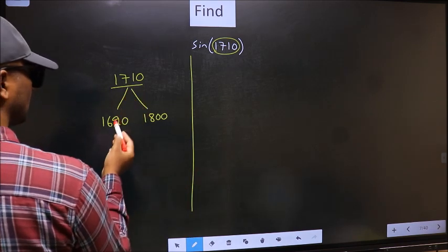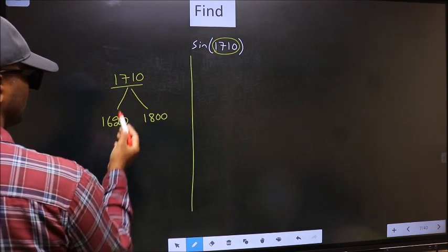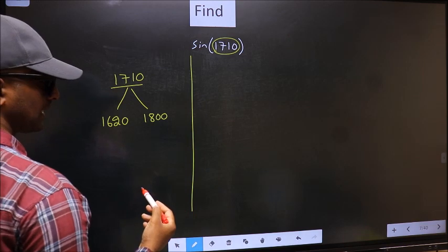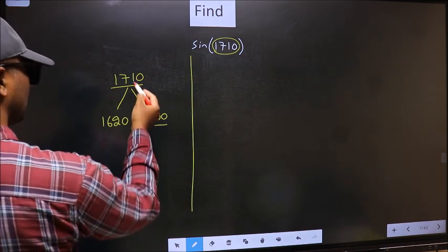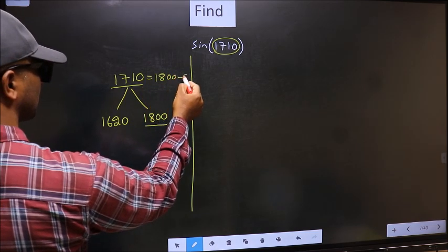Now 1710 is close to which number? This is equally close to both the numbers, so you select any one number. Let us say I select 1800. So now this should be written as 1800 minus 90.